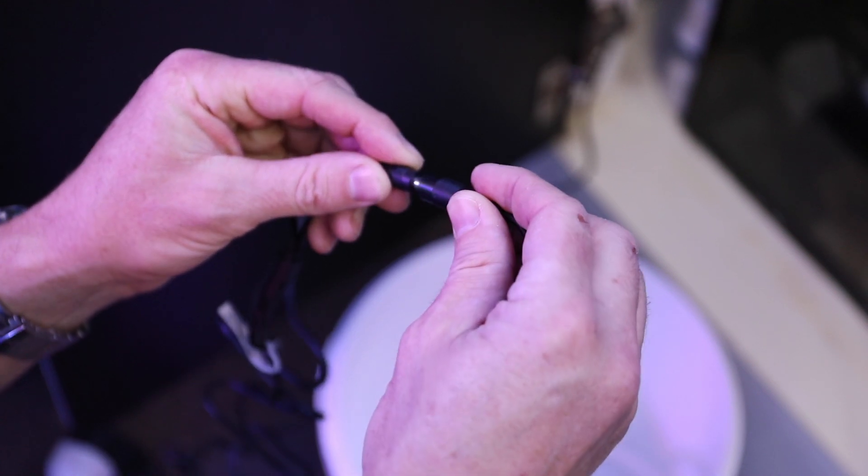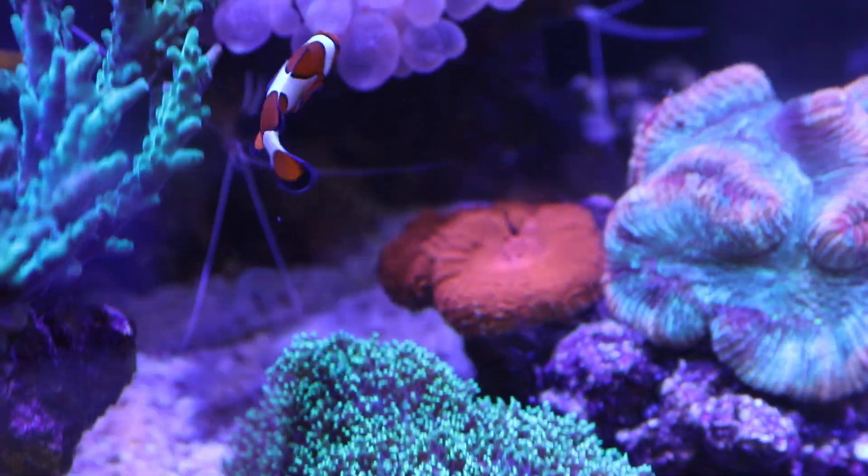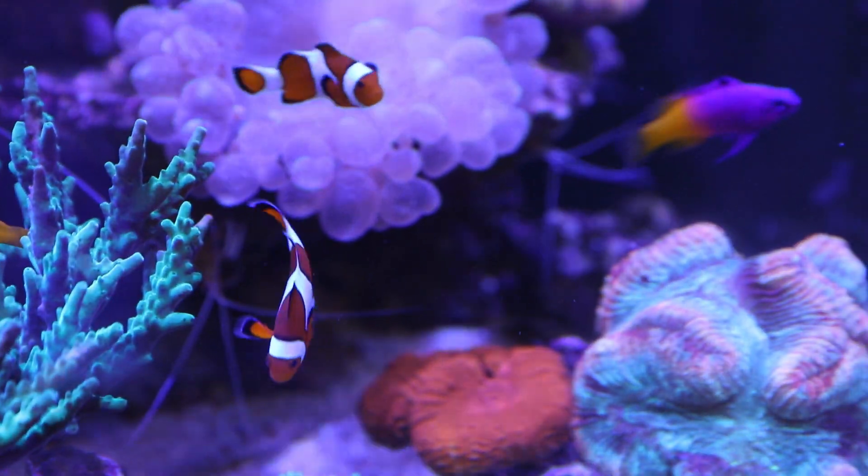Fill up the reservoir tank again with RO water. Unplug the system and wait until the red light switches off. Put the plug back in and the system will run again.